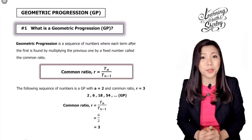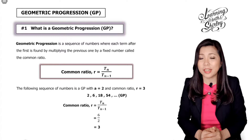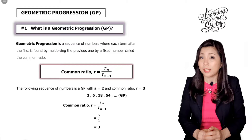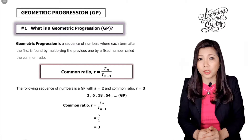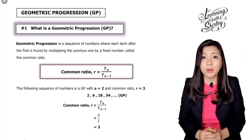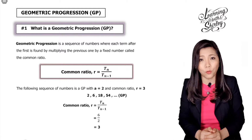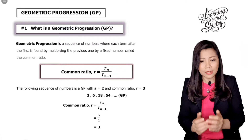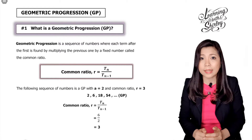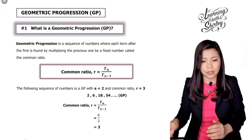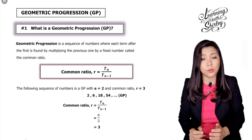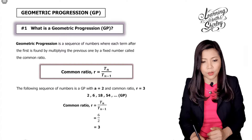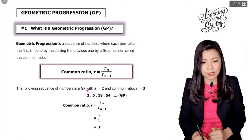A geometric progression is a sequence where each term after the first is found by multiplying the previous one by a fixed number, which is called the common ratio. The formula for common ratio is r equals tn over tn minus 1. Let's look at this example: 2, 6, 18, 54 is a geometric progression. To find the common ratio we use r equals tn over tn minus 1, labeling t1, t2, t3, and t4.